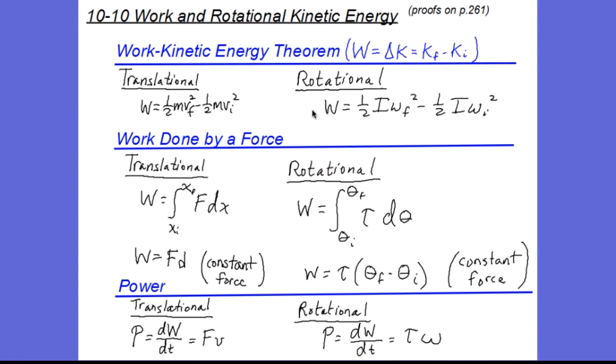Now for rotational motion, we're going to replace the kinetic energies of translational motion with kinetic energy of rotational motion. So our new work kinetic energy theorem comes out to be 1/2 I omega final squared minus 1/2 I omega initial squared.